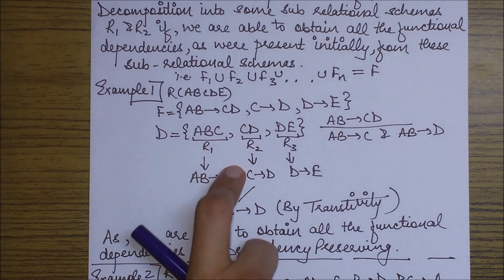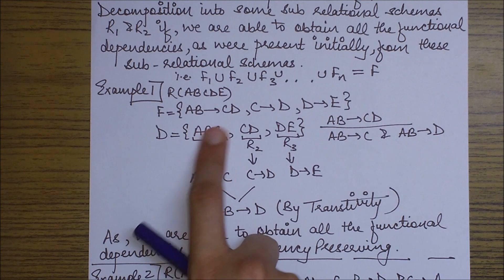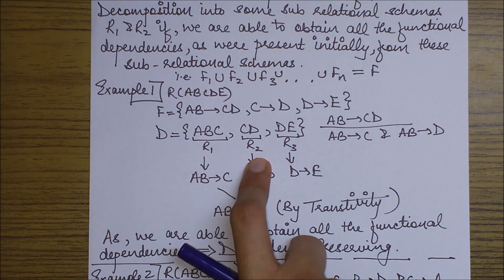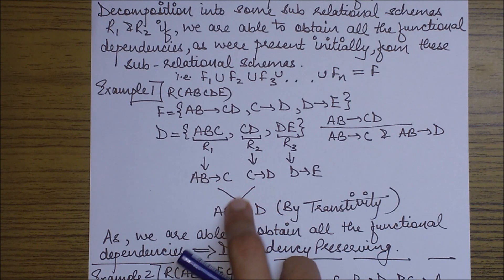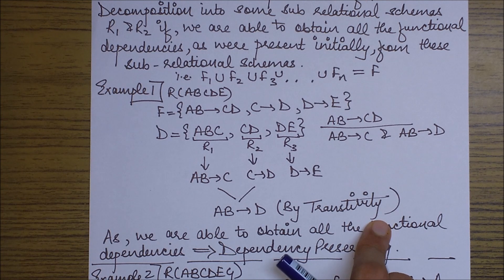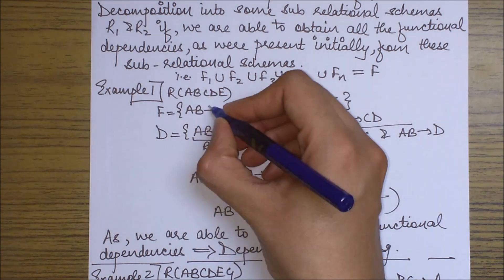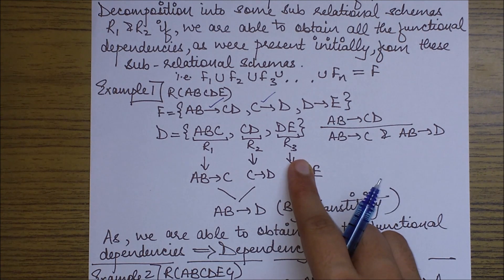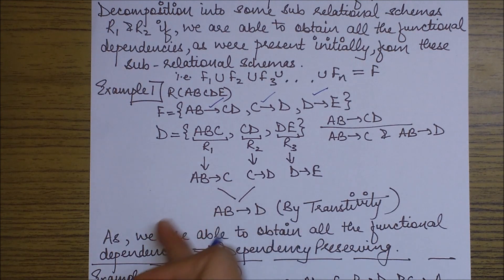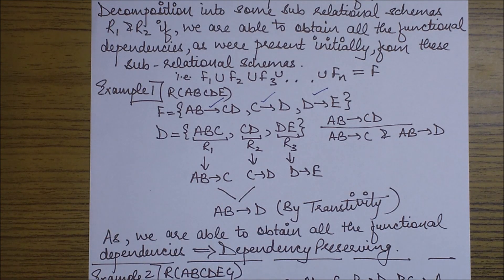Next is AB goes to D. I cannot determine this from R1 because D is not present there, so I move to the next. From R2 we have CD goes to D, and by using the combination of AB goes to C and CD goes to D I can derive AB goes to D by transitivity. Next is D goes to E — I can derive this very simply from R3. So I am able to get all the functional dependencies which were present initially in set F.